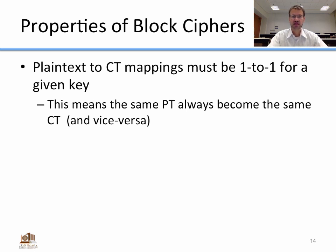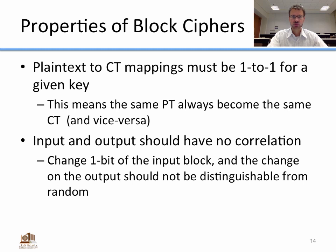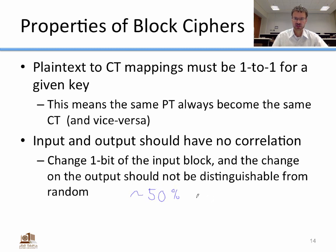Key properties of block ciphers: plain text to cipher text mappings must be one-to-one for a given key, meaning the same plain text block always produces the same cipher text block and vice versa. It's also important that input and output have no observable correlation — if you change one bit of a 128-bit input, about 50% of the output bits should change, in a way indistinguishable from random.